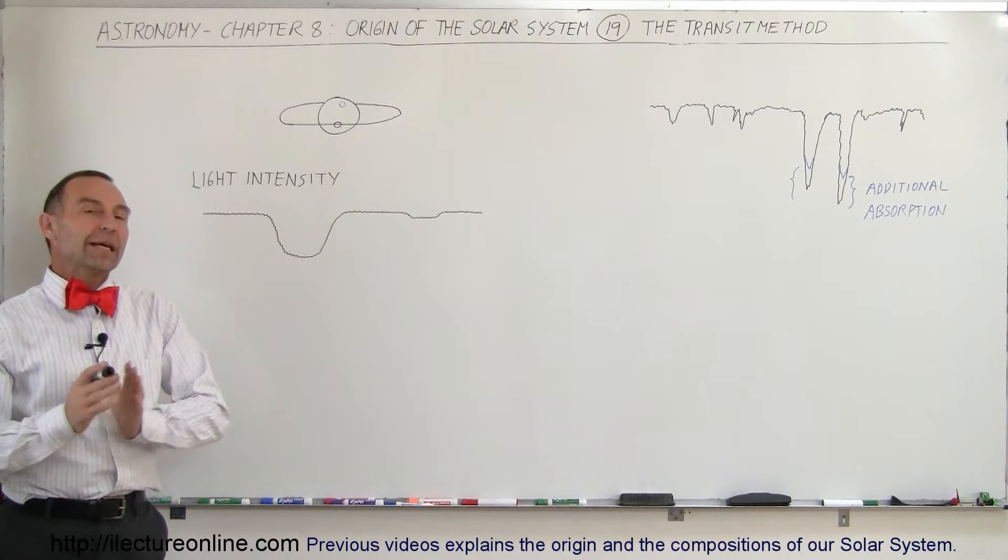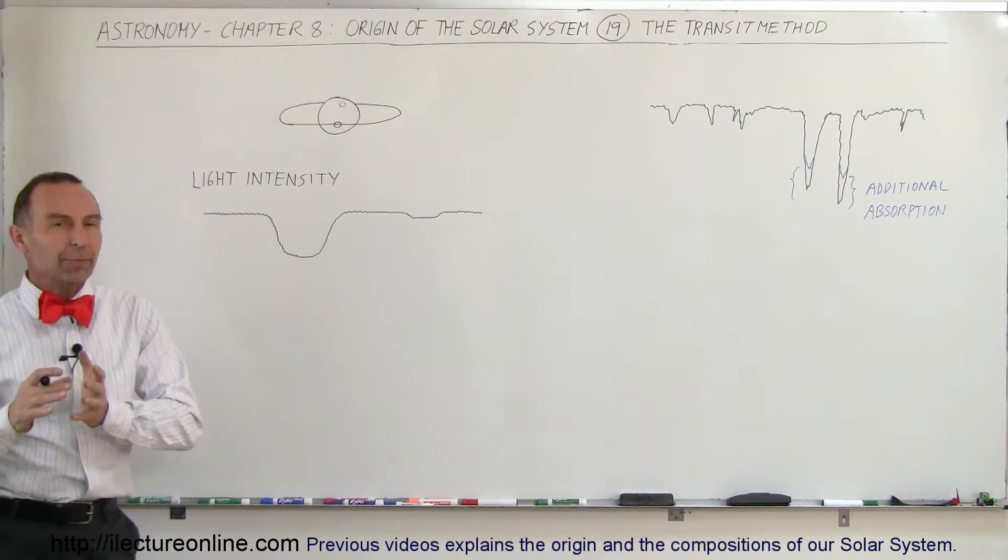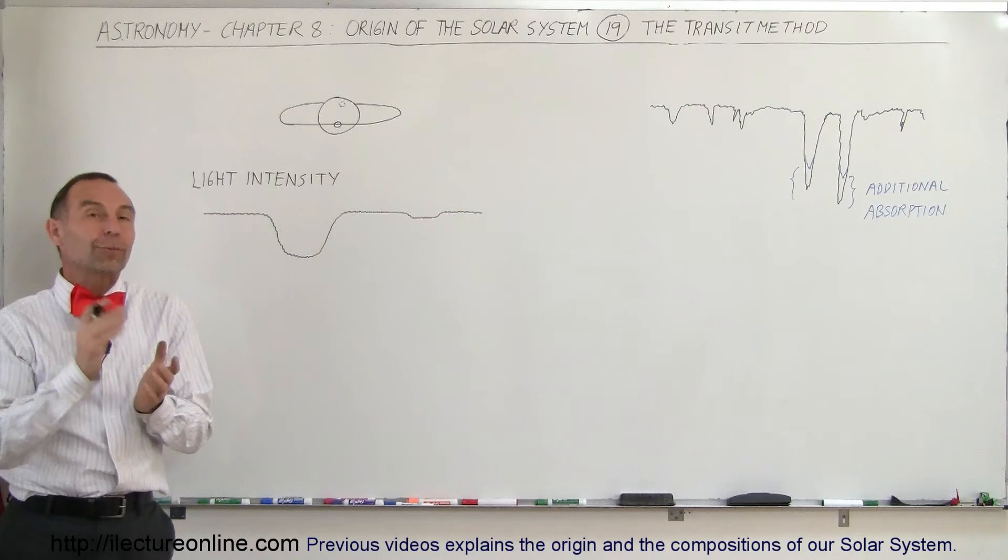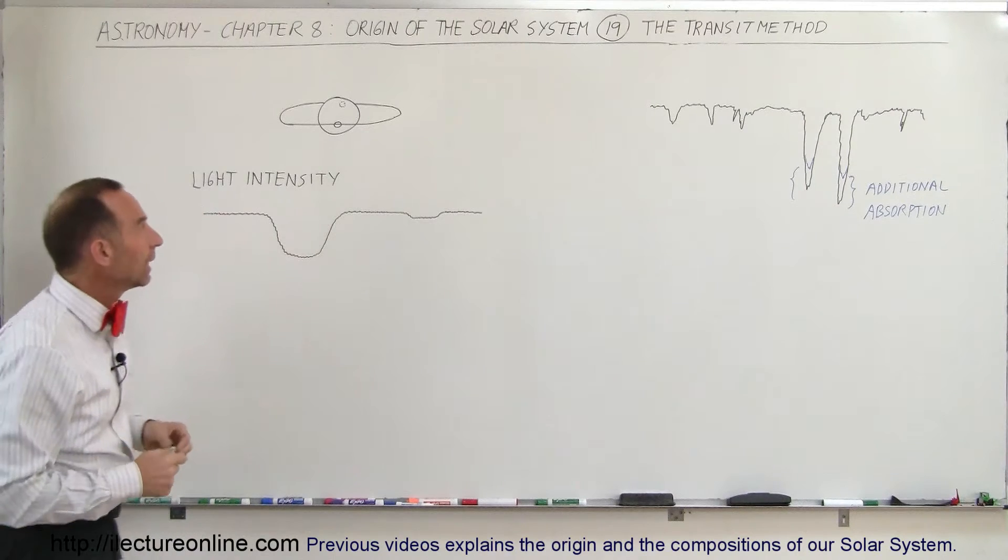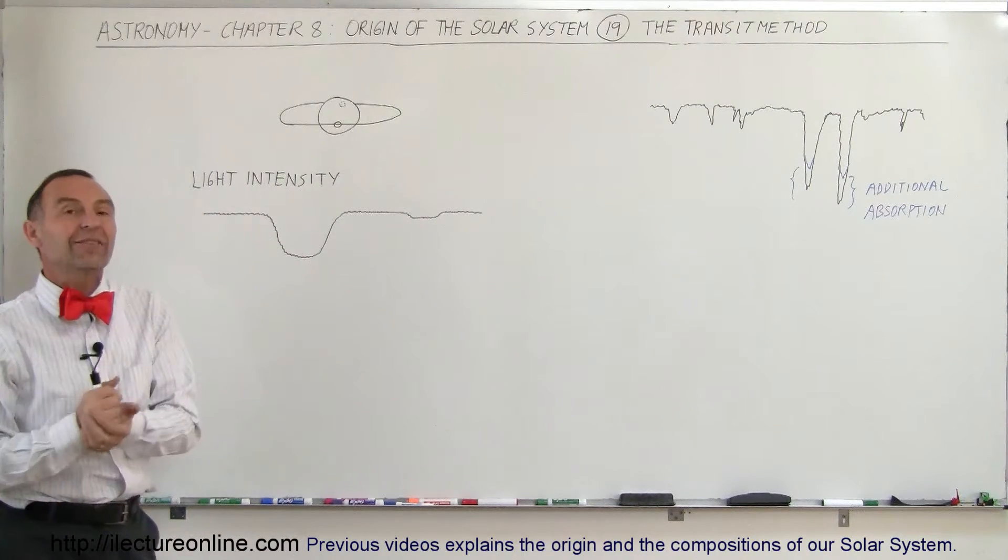Welcome to ElectronLine. The secondary method, which has now become the most popular method to determine whether or not there are planets around stars nearby our solar system, extrasolar planets, is called the transit method.